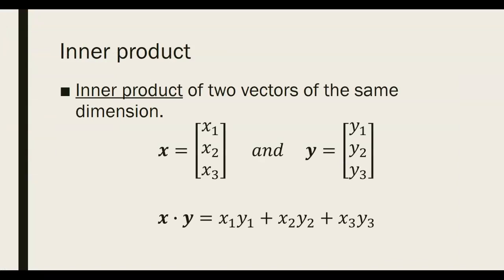Let's start with inner product. We all know that we can't multiply two vectors together under normal matrix multiplication operations. However, there are a couple of different ways in which we can define a multiplication of two vectors. One of those is called the inner product. In order to calculate an inner product, the vectors have to be of the same dimension. In our case, we have three-dimensional vectors from R3. The inner product of two vectors is always written as vector x dot vector y — that is the standard notation.